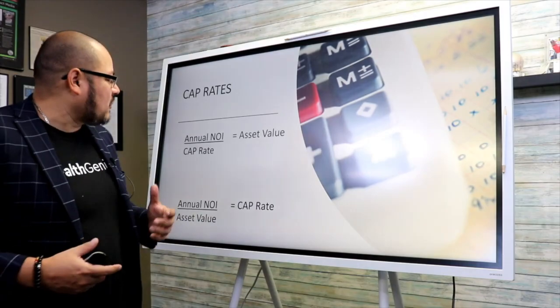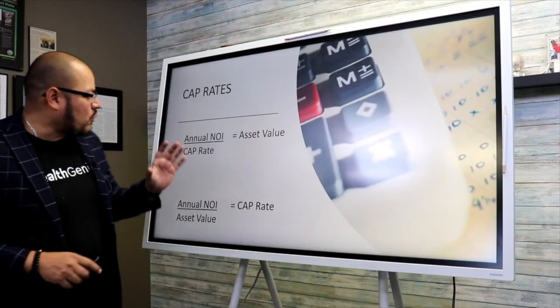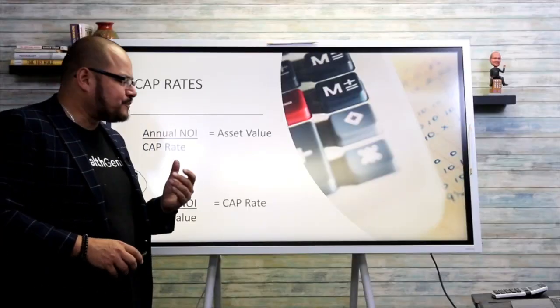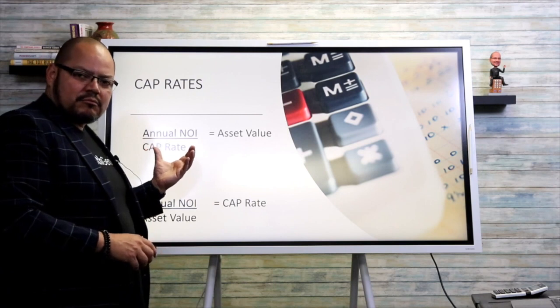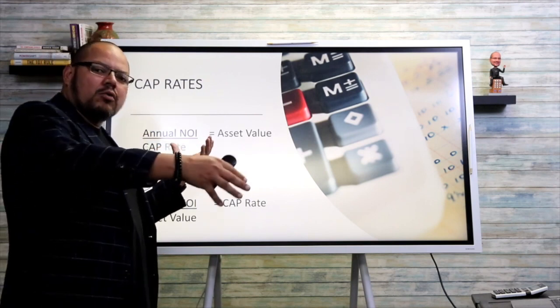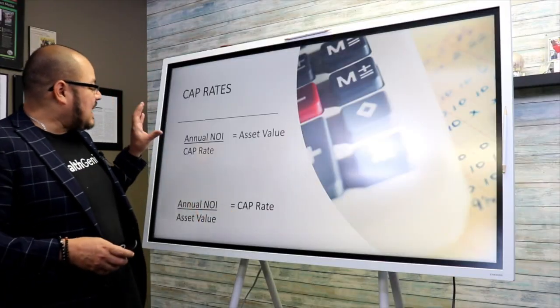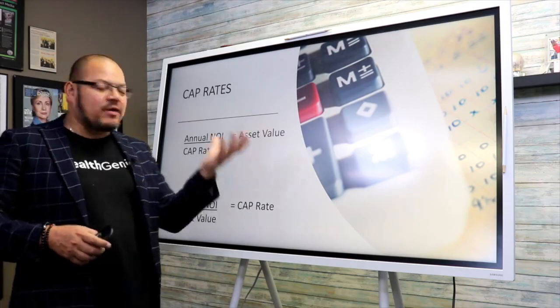Let's talk about the cap rate formula. Cap rates are derived from the net operating income. You take your annual net operating income and divide it by the cap rate. You can Google what the cap rates are in your market. Once you've been doing this for a while, you'll start to notice — okay, Toronto's cap rate is right now around 3.5%, Hamilton is hovering around 4%, Ottawa is hovering around 4%. So it gives you an idea of how they came up with the purchase price or asking price. Annual net operating income divided by your cap rate gives you your asset value.